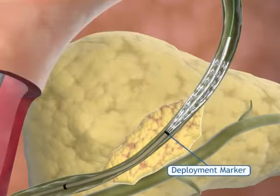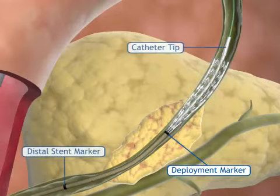A radio opaque marker at the end of the sheath will indicate the relative amount of stent deployment as the markers at the tip and the distal stent remain stationary. If distal repositioning is necessary, retract the catheter slowly.